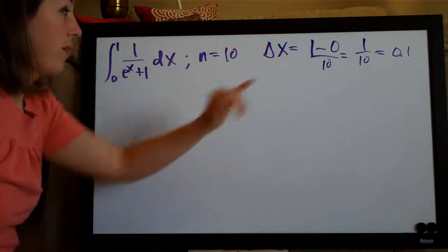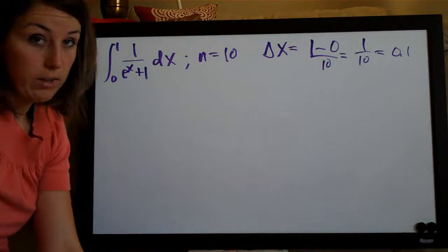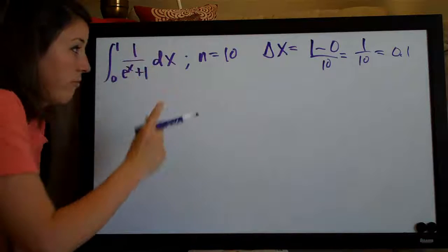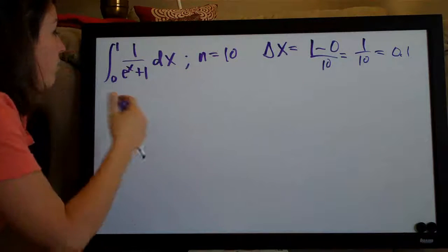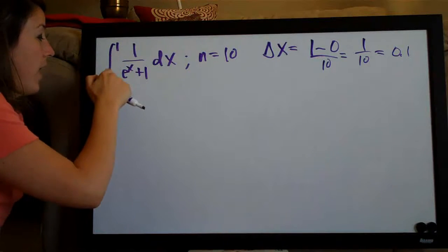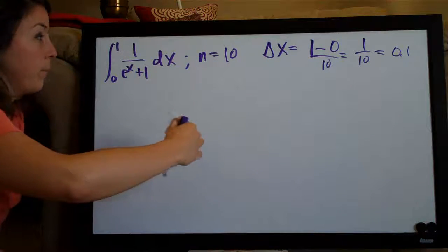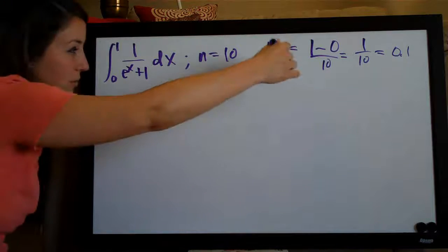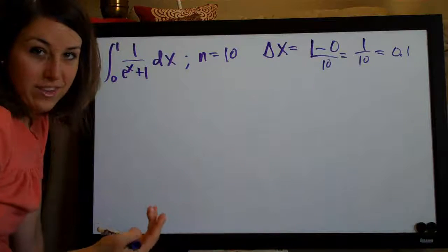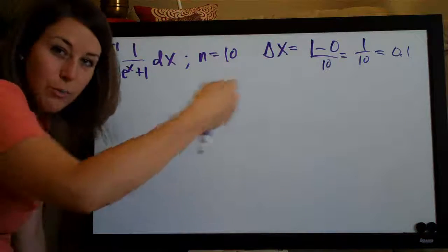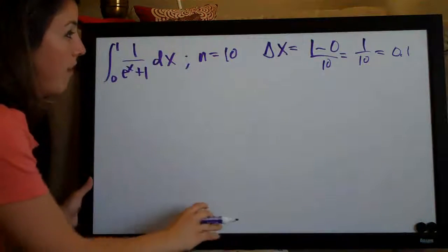And basically what that tells us, n is the number of trapezoids that they want us to use to approximate the area under this curve. So we're going to break it up into ten trapezoids. We need to divide the area from zero to one into ten sections which means that when we find delta x, the first trapezoid is going to go from zero to point one, the second trapezoid is going to go from point one to point two, the third one from point two to point three all the way up until the last one which goes from point nine to one.